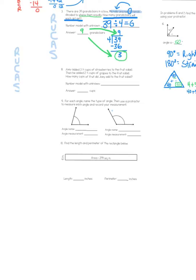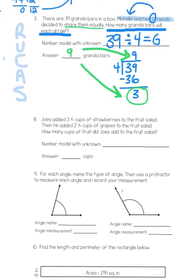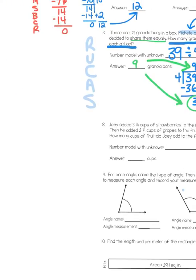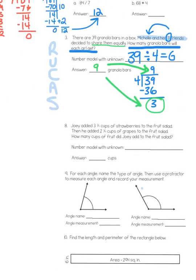Let's look at the last page. This has some fractional problems and some measurement of some angles. Number 8 Joey added 3 and 3/4 cups of strawberries to the fruit salad. Then he added 2 and 3/4 cups of grapes to the fruit salad. How many cups of fruit did Joey add to the fruit salad? Again, this is a ruckus style number problem so I'm just going to think about reading it again underlining the question and then circling the important information. So, I'm going to underline the question. That's the sentence with the question mark at the end. How many cups of fruit did Joey add? Oh boy, there's a giveaway. It just says add right there to the fruit salad.